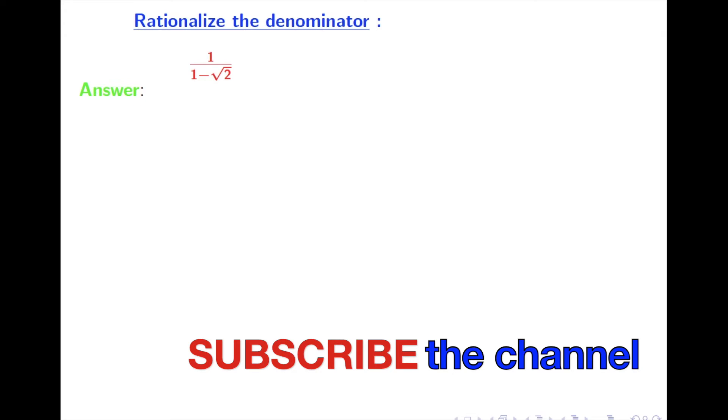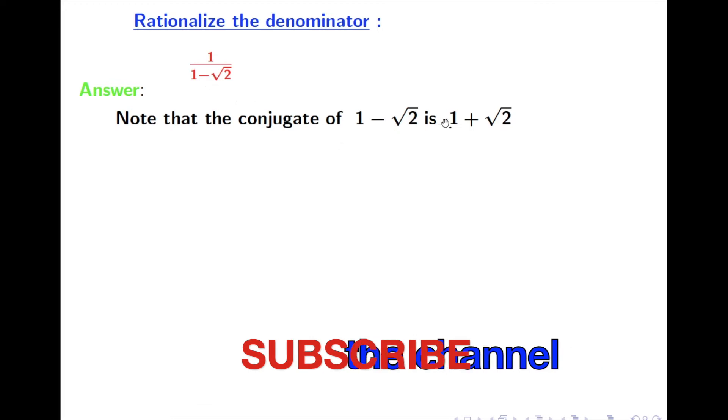Now in order to make it rational we have to multiply both the numerator and the denominator by the conjugate of 1 minus root 2. And we know that the conjugate of 1 minus root 2 is 1 plus root 2.